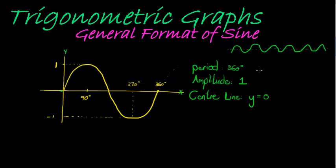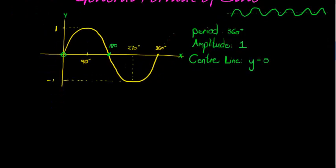We have all the information needed to draw this graph. Just to mention: smack in the middle between 0 and 360, at 180 degrees, we're again at 0 and heading down. Now I'm going to give you the format for the general sine graph — this was just the simplest one. The basic one is f(x) = sin(x).